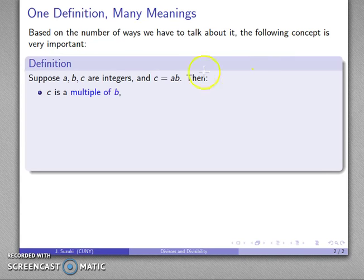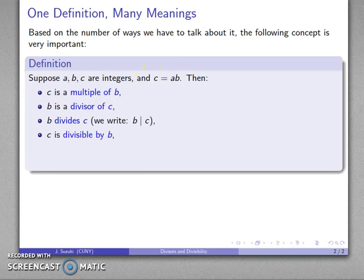Then I can speak about the relationship between them in the following ways. First of all, I might say that c is a multiple of b. I could also say that b is a divisor of c. I could also shorten that somewhat and say that b divides c. And in this particular case, I also have a way of writing that. That's b vertical bar c. And I might also say that c is divisible by b.